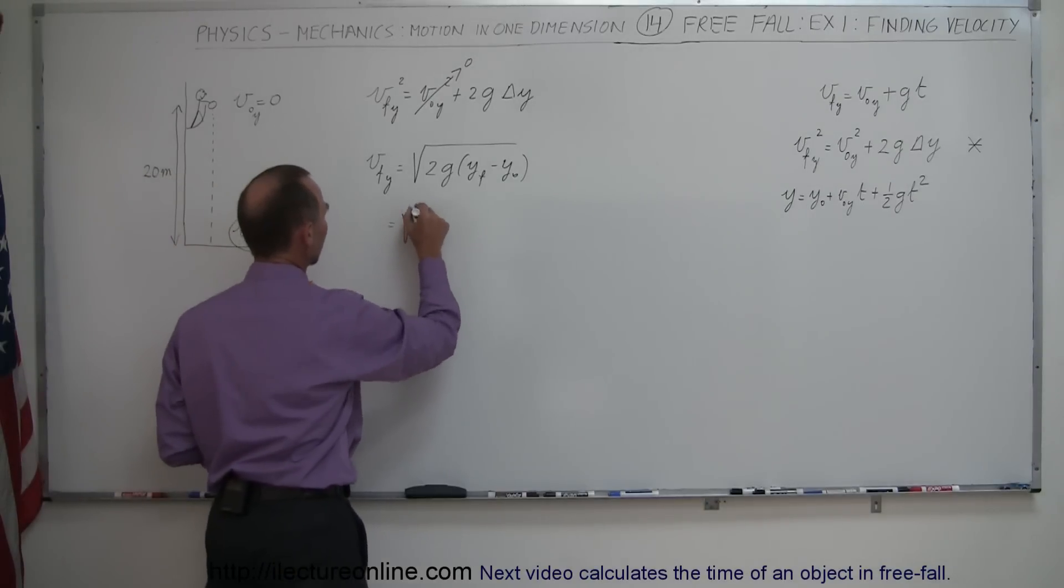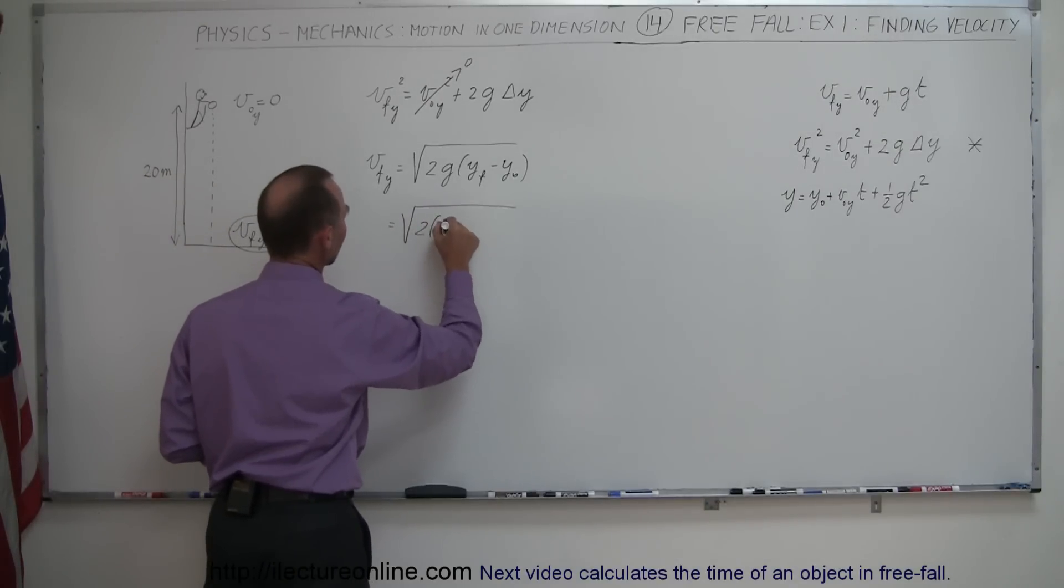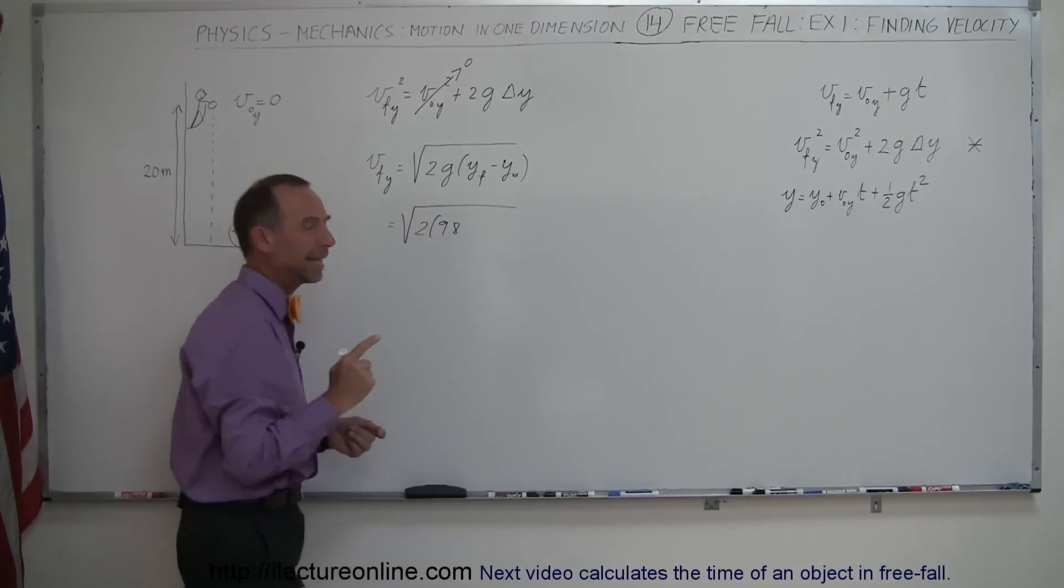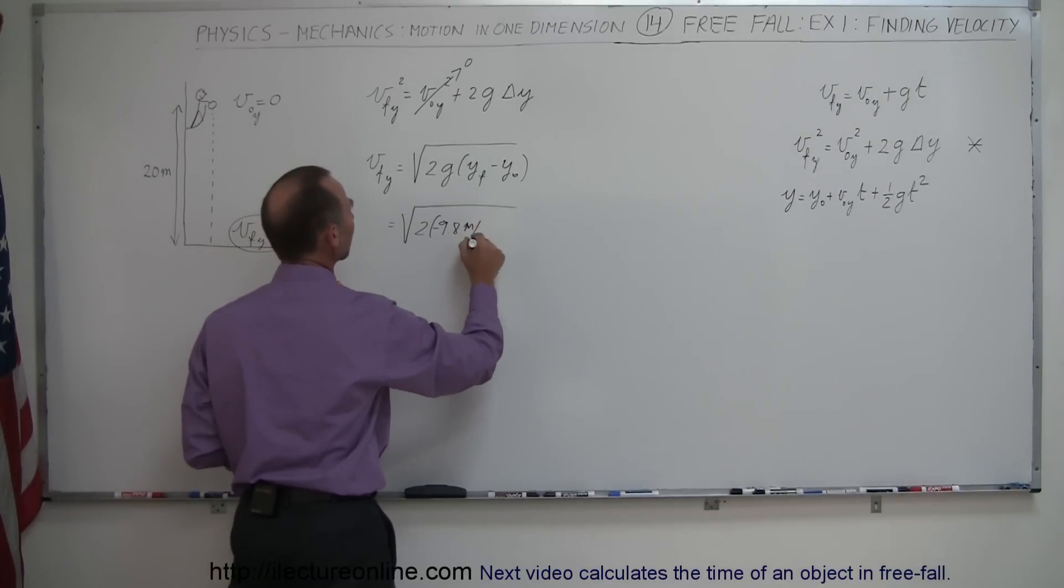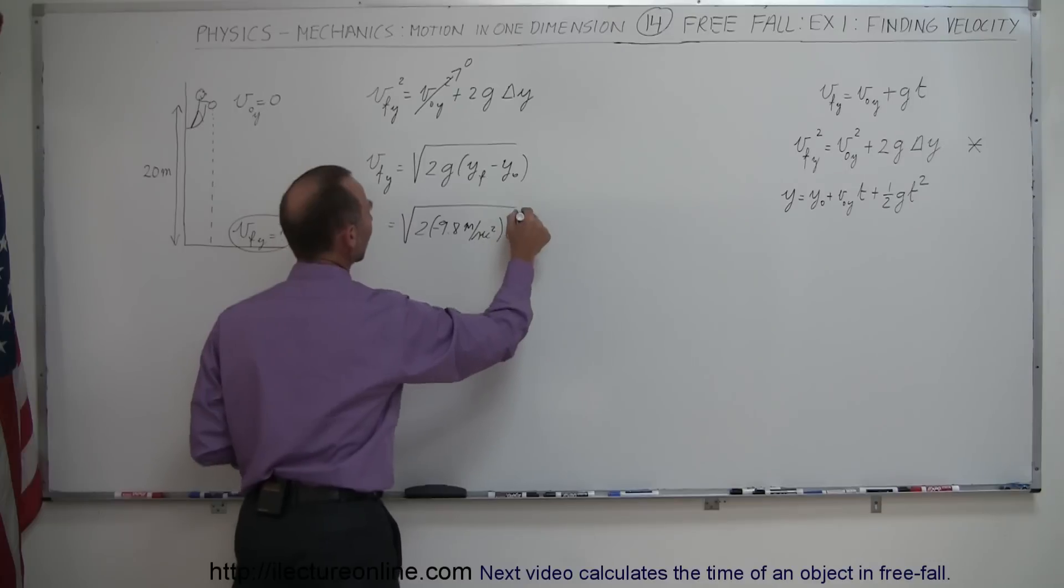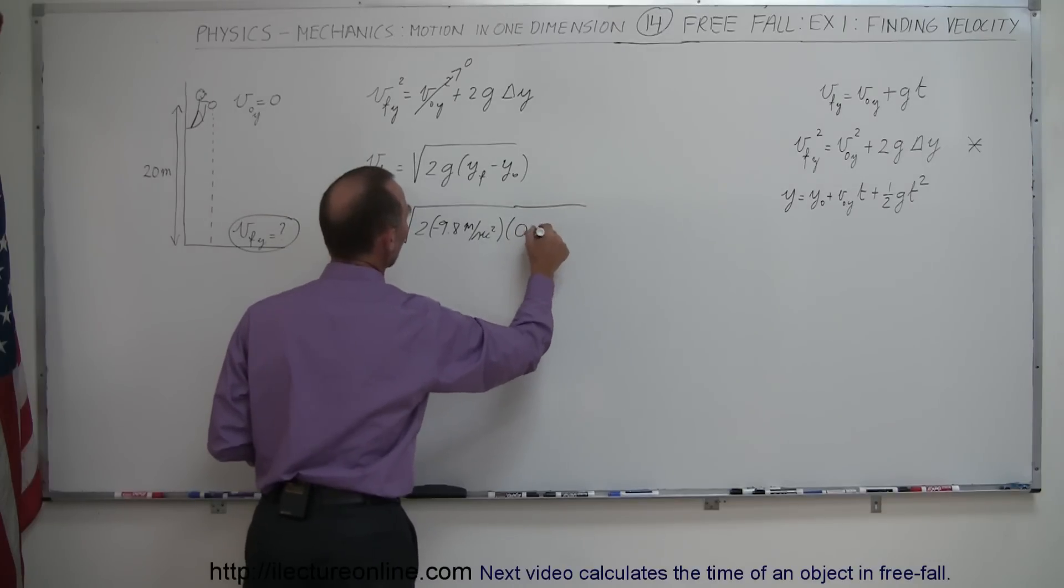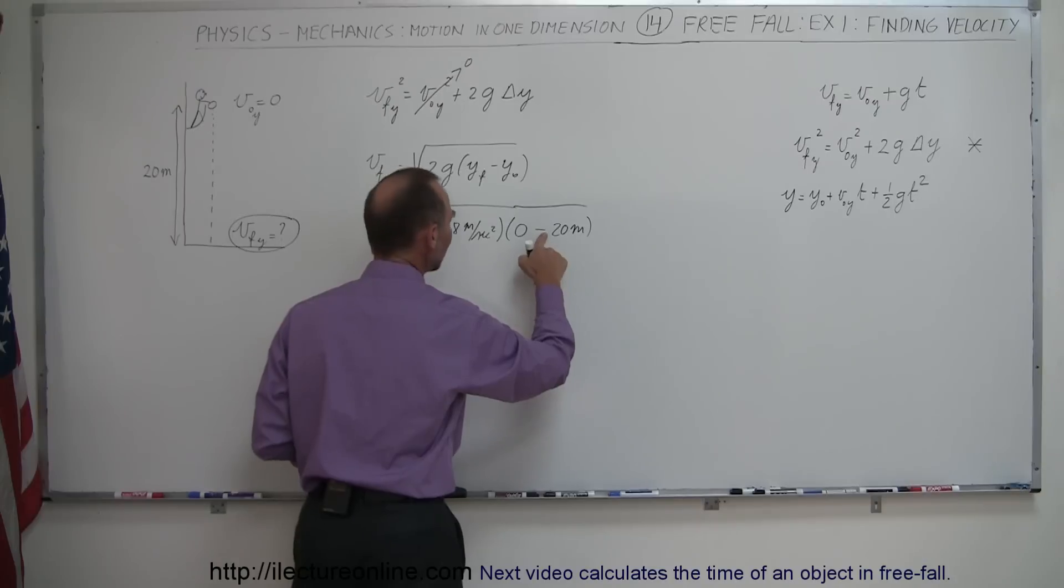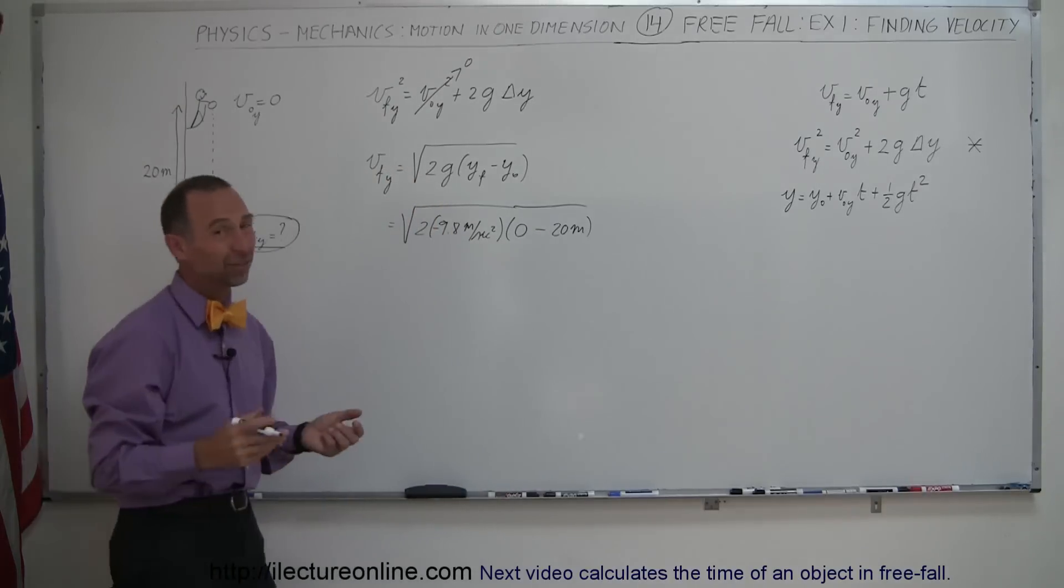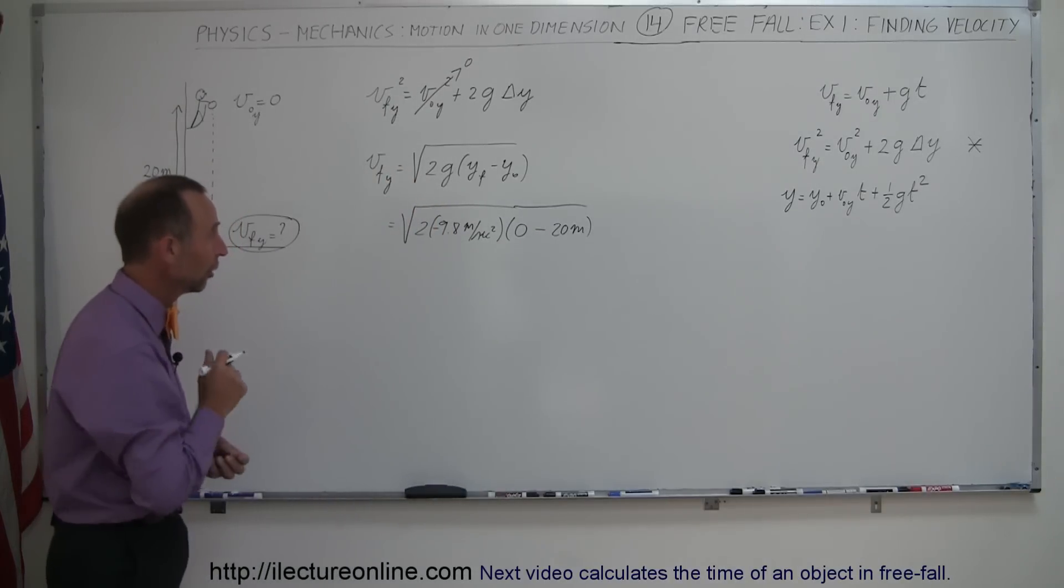This equals the square root of 2 times 9.8—that's going to be minus 9.8 meters per second squared—times y-final, which is zero, minus y-initial, which is 20 meters. Here you can see this minus will cancel out that minus, because we can't take the square root of a negative number.